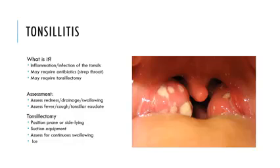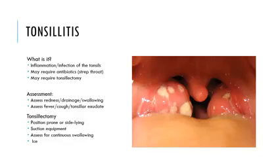Any sort of obstruction, we're worried about stridor. We also assess for fever, cough, and tonsillar exudate — those white, yellowish deposits on the tonsils. Sometimes they can be tonsil stones, but more commonly this is exudate giving that crusty appearance on the tonsils.